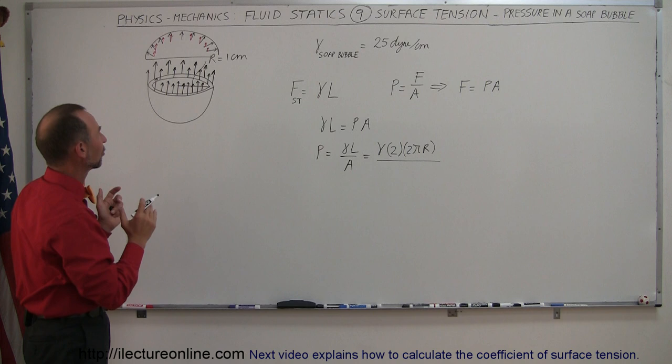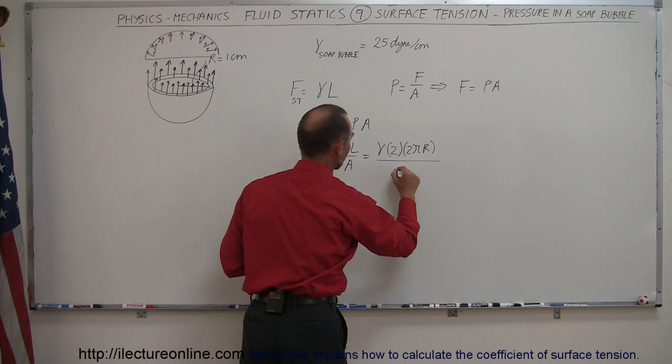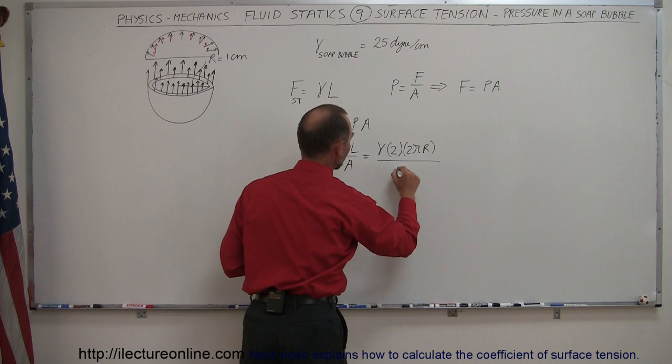And so therefore, we have what we call an effective area over which this pressure acts, which would be the cross-sectional area of the soap bubble, not the dome-shaped area. So that means for an area, we use πr² because that's the effective area over which the pressure acts.